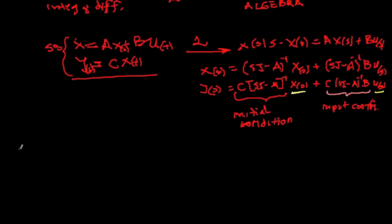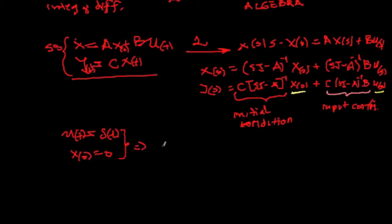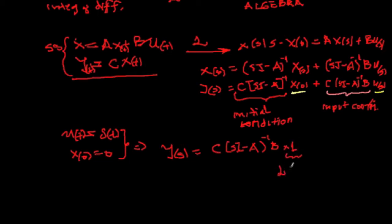Now we can see easily that for u(t) = δ(t) and initial condition x₀ = 0, we have that the response Y(s) is just C(sI - A)⁻¹ B multiplied by 1, since the Laplace transform of δ(t) equals 1. In other words, this entire expression is some polynomial N(s)/P(s).